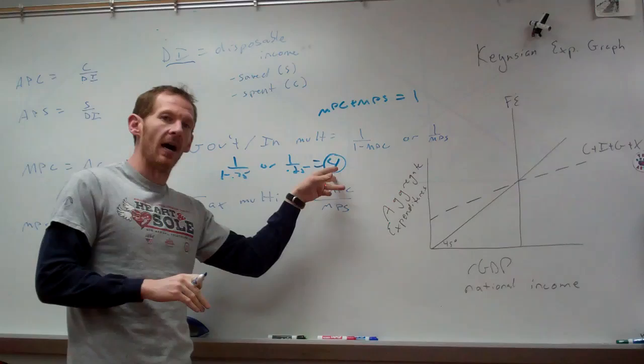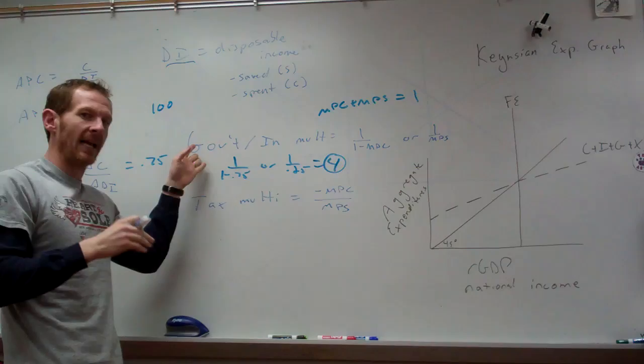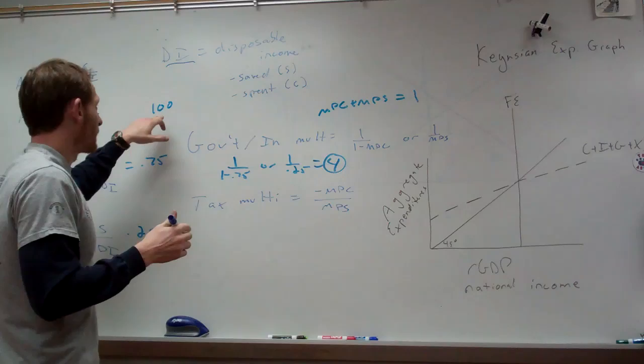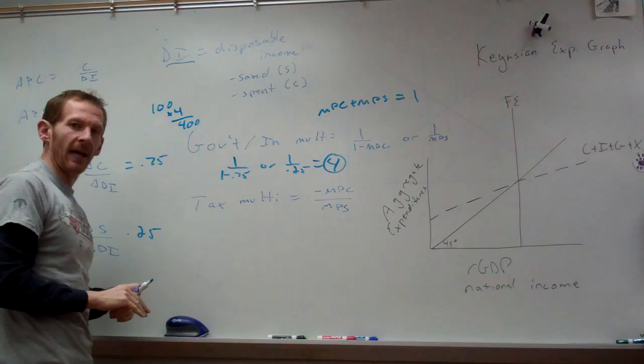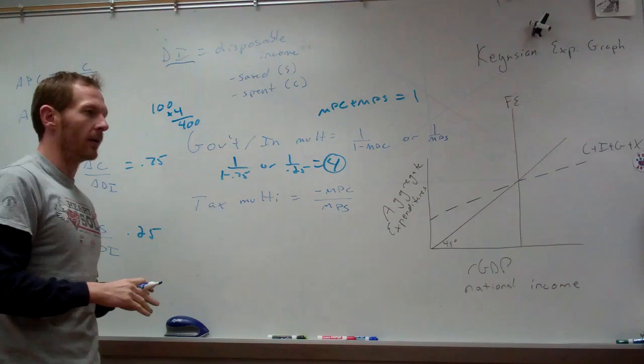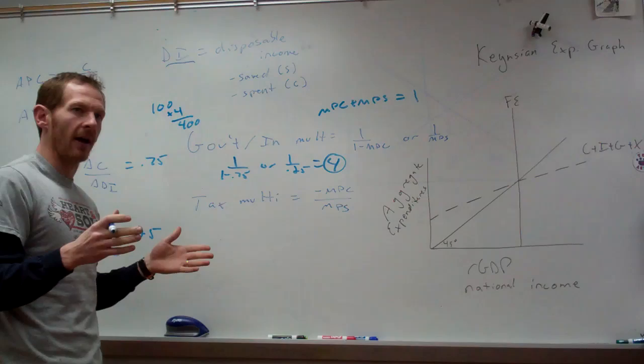If we want to make up a lapse in a recession using fiscal policy, the government doesn't have to spend the entire gap to reach full employment production. They just need to figure out what our multiplier is, how much we're in recession, and address the difference. For example, direct government spending includes building roads, bridges, or an aircraft carrier — not security spending.